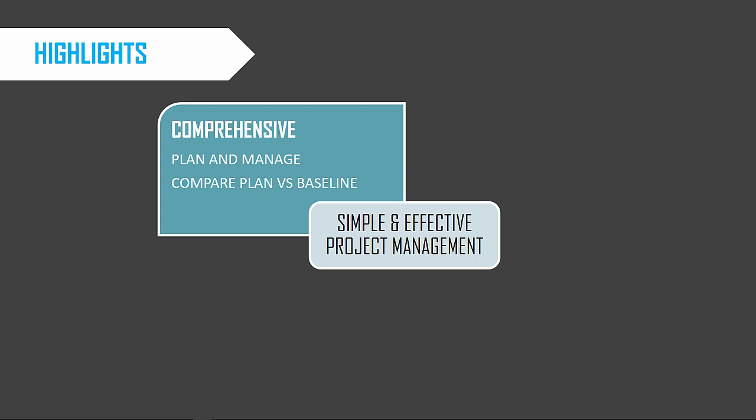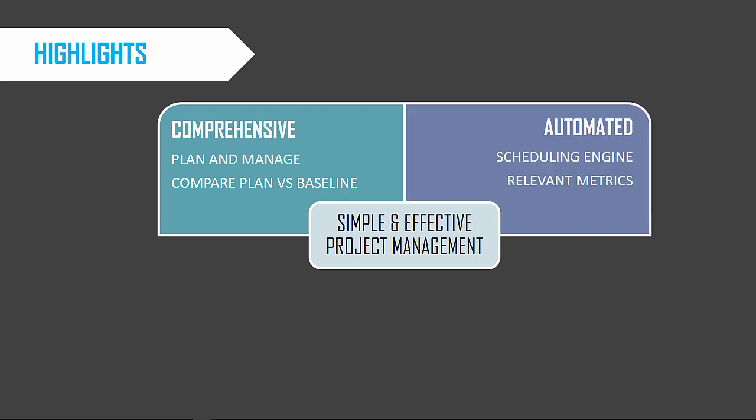We can set a baseline plan and then, as we update the actual work performed, it allows us to compare current plan versus baseline at any time. It includes an automatic scheduling engine. The engine takes as input the list of tasks, work required for each task, assignment of a resource to each task, and the resource availability. Using these inputs, the template calculates which resource works on which task for how many hours on a given day.